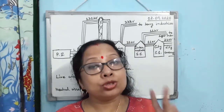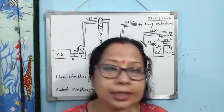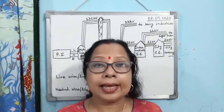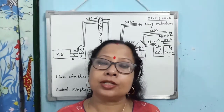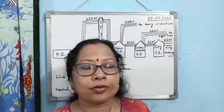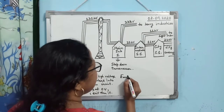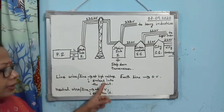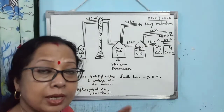Remember two important points about live and neutral lines. The live line is maintained at high voltage, and current enters the circuit through the live line. The neutral line is maintained at zero voltage, and current exits from the circuit through the neutral line. Please write these points elaborately in your notebook as I have said verbally.